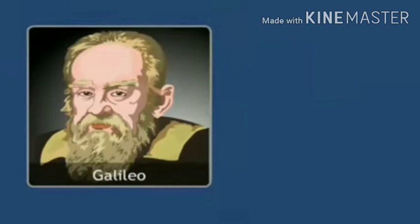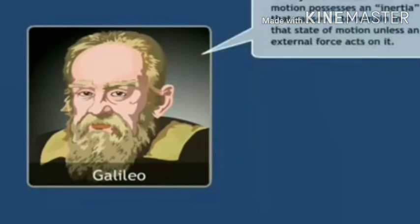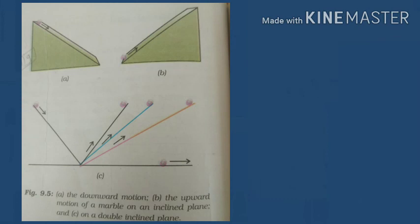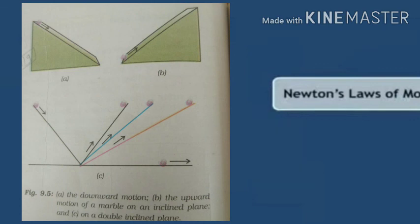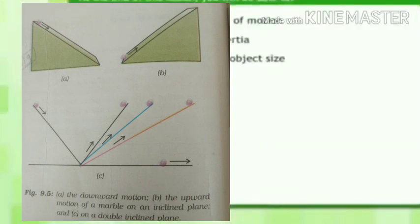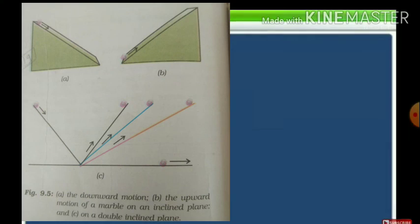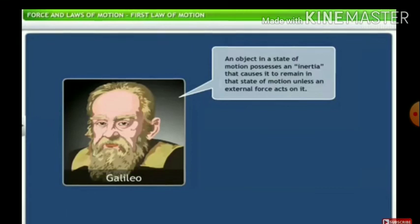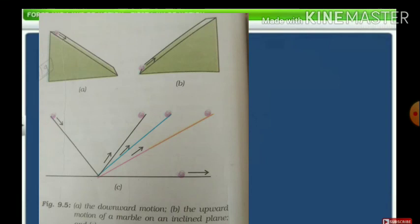Galileo Galilei was born on 15th February 1564 in Pisa. He was a mathematician who, by observing the motion of objects on an inclined plane, deduced that objects move with constant speed when no force acts on them. He observed that when a marble rolls down an inclined plane, its velocity increases. This suggests that an unbalanced force is required to change the motion, but no net force is needed to sustain uniform motion. An object moves with uniform velocity when forces acting on it are balanced and there is no net external force.